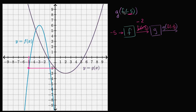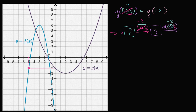So instead of saying g of f of negative five, we can say f of negative five is just negative two. So this is going to be equivalent to g of negative two. We're going to take negative two as the input into g and output g of negative two. When x is negative two, what is g? We see the graph is right over there.